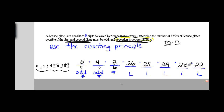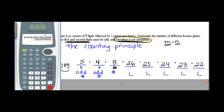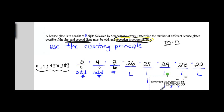To get the total number of different license plates, we multiply all the values together: 5 × 4 × 8 × 26 × 25 × 24 × 23 × 22. That gives us a total of 1,262,976,000 different license plate options with these stipulations.